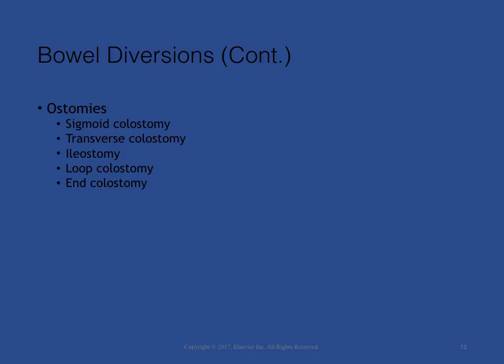The location of an ostomy determines stool consistency. A person with a sigmoid colostomy will have more formed stool. The output from a transverse colostomy will be thick liquid to soft consistency. These ostomies are easiest to perform surgically and are done as a temporary means to divert stool from trauma or perianal wounds, or as a palliative diversion if obstruction from a tumor is present. With an ileostomy, the fecal effluent leaves the body before it enters the colon, creating frequent, liquid stools. Loop colostomies are reversible stomas. The end colostomy consists of a stoma formed by bringing intestine through the abdominal wall, turning it down like a turtleneck and suturing it to the abdominal wall; the distal intestine is either removed or sewn closed.